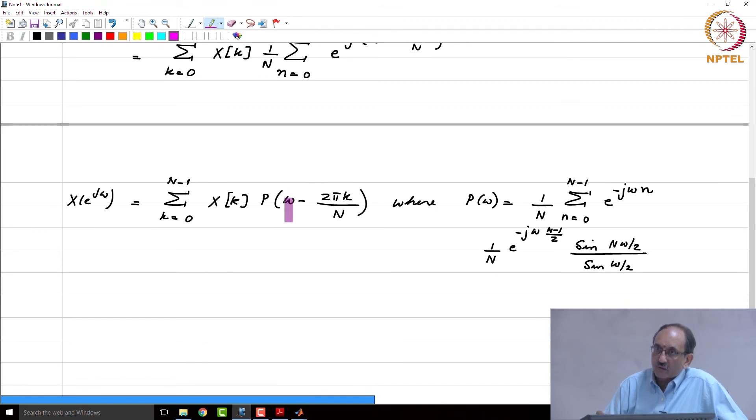So, two things are different here. One obvious difference is the interpolating function now is this, rather than your sinc t by T which is the analog sinc. The other important difference is that you can observe from the formula is...